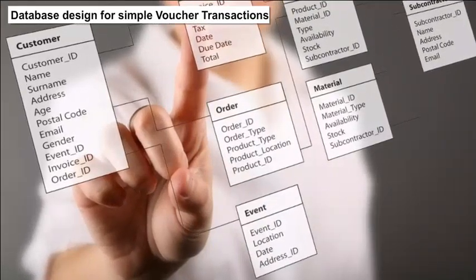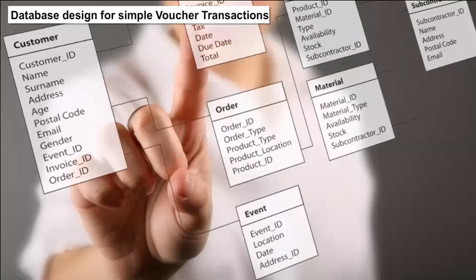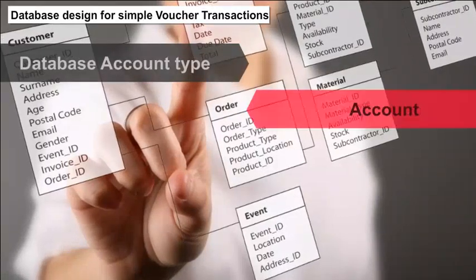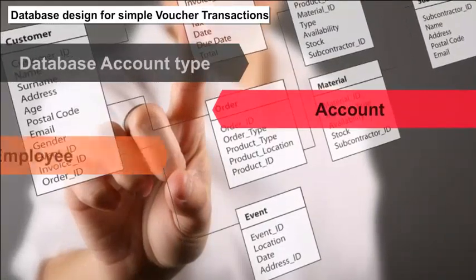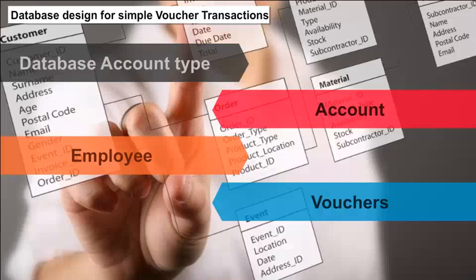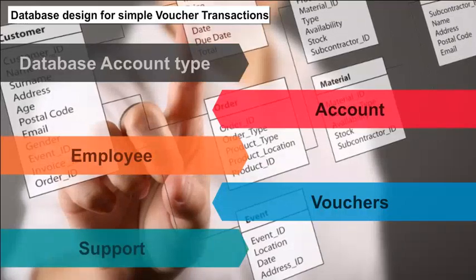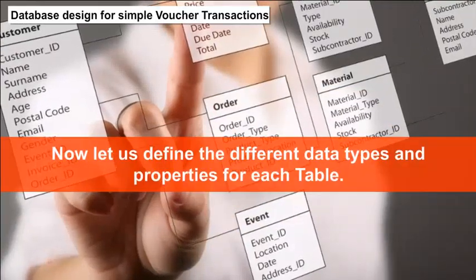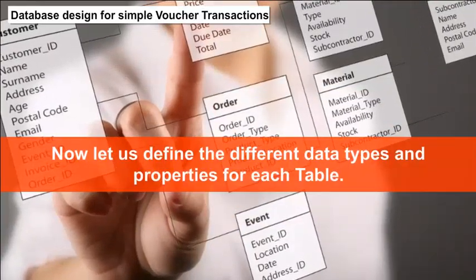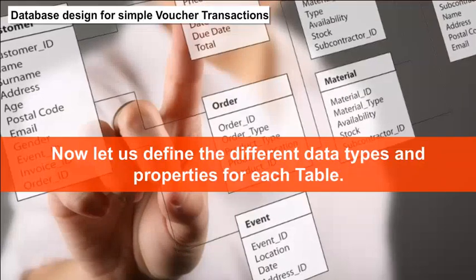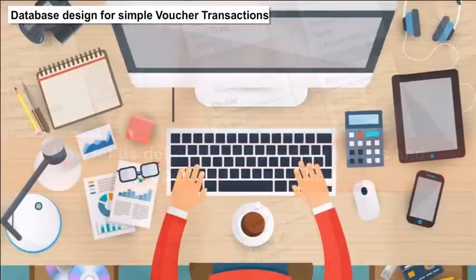Database designed for simple voucher transactions: Let us say there are five tables in the database — Account Type, Account, Employee, Vouchers and Support. Now let us define the different data types and properties for each table. Account Type: This table has two columns, Category and Category ID.